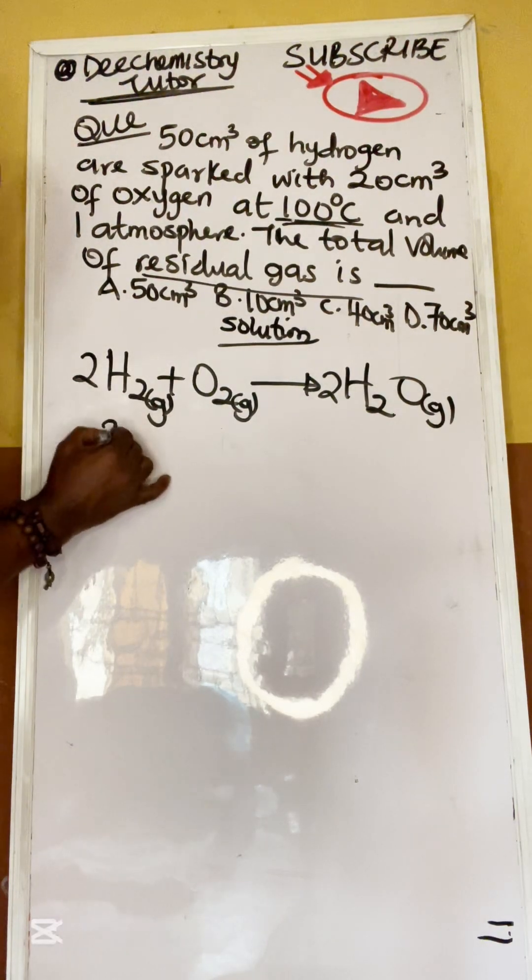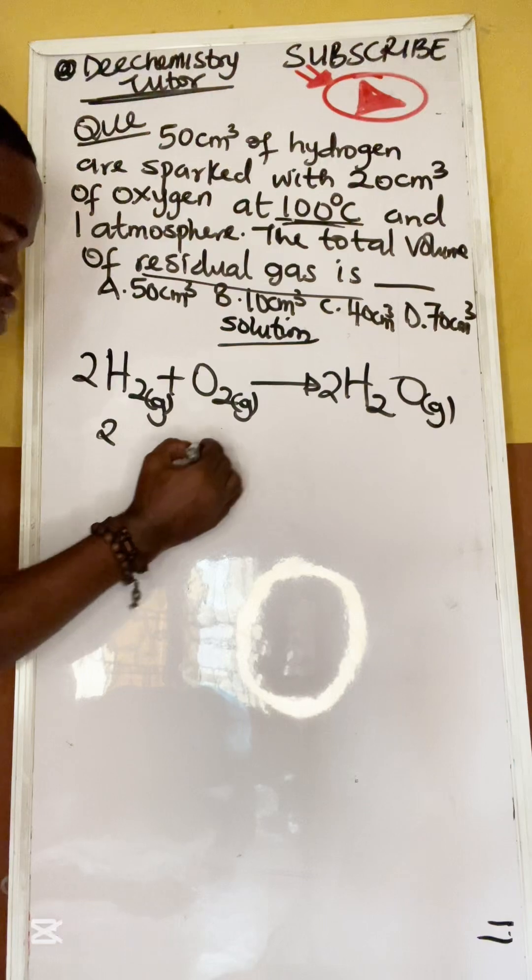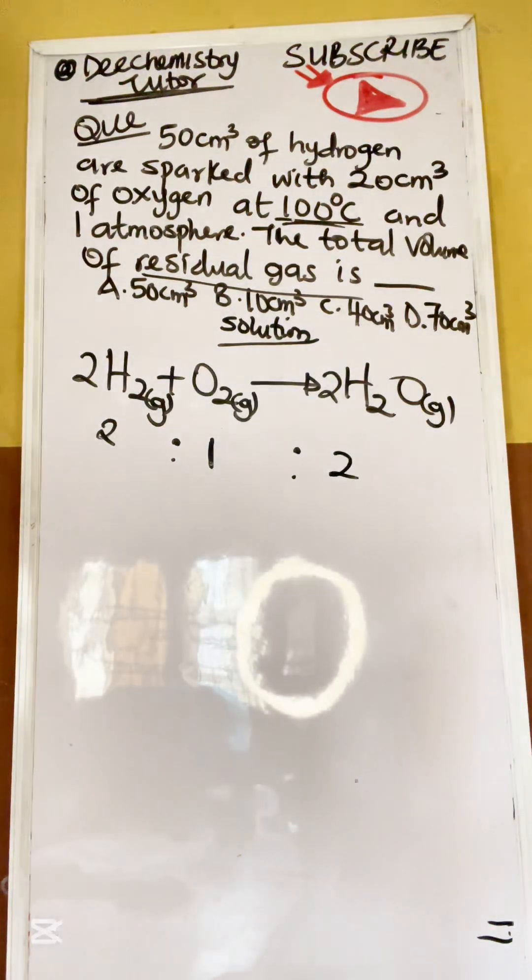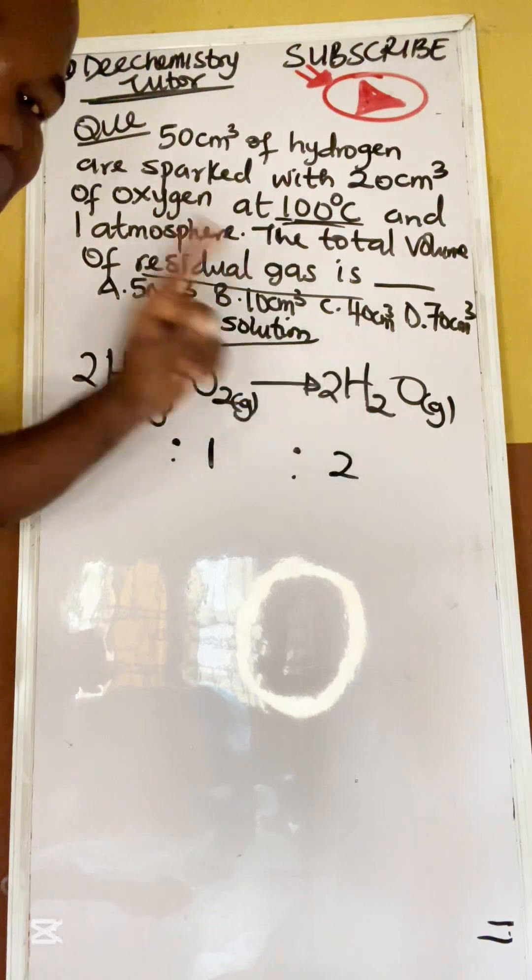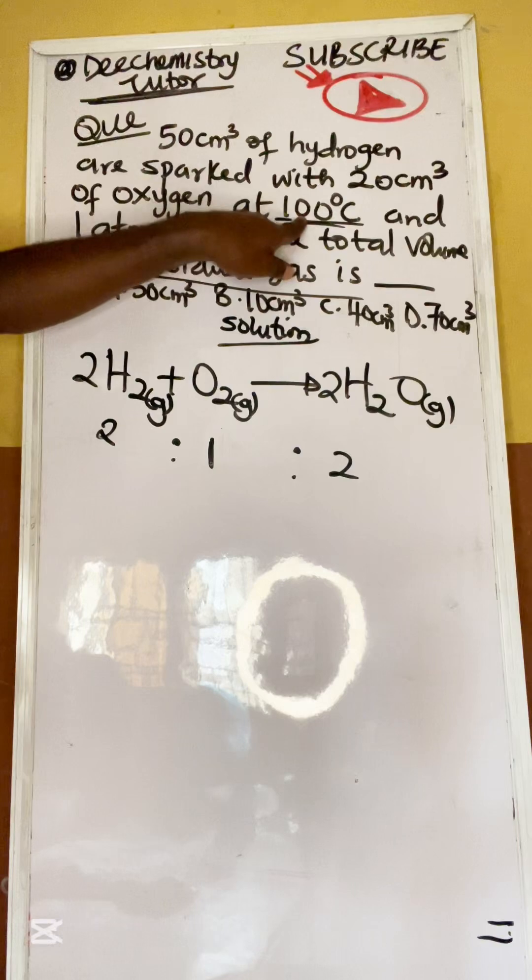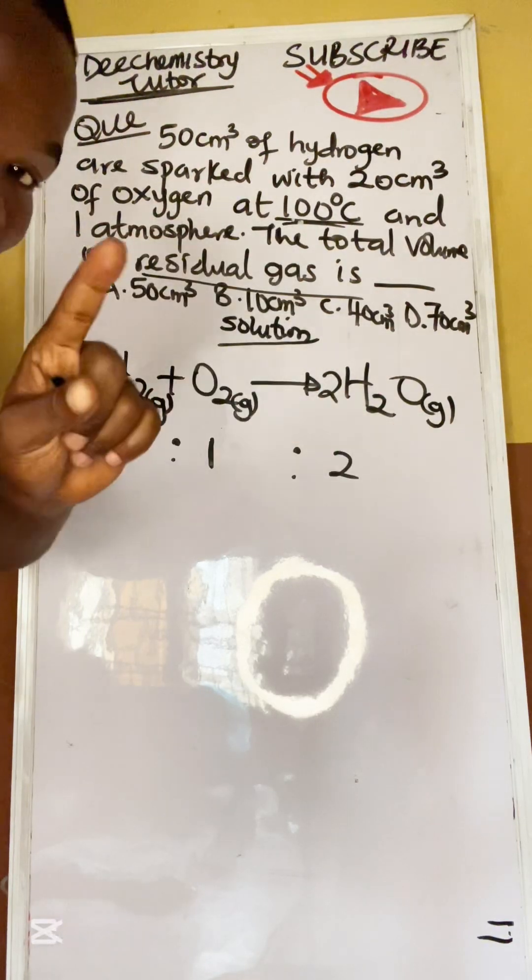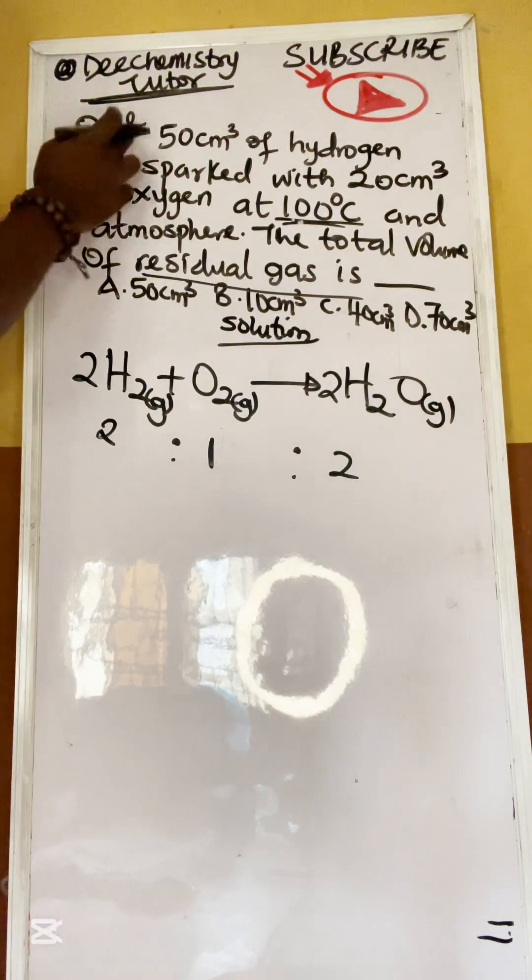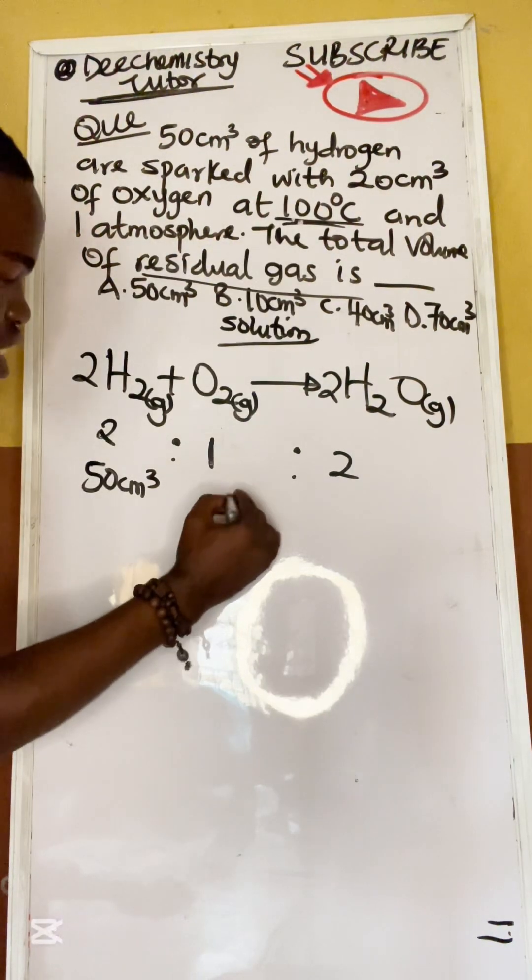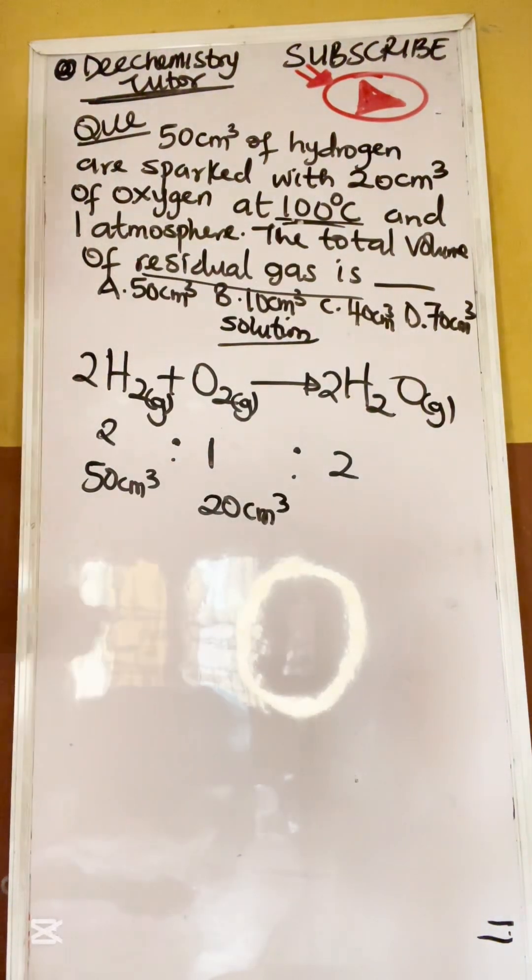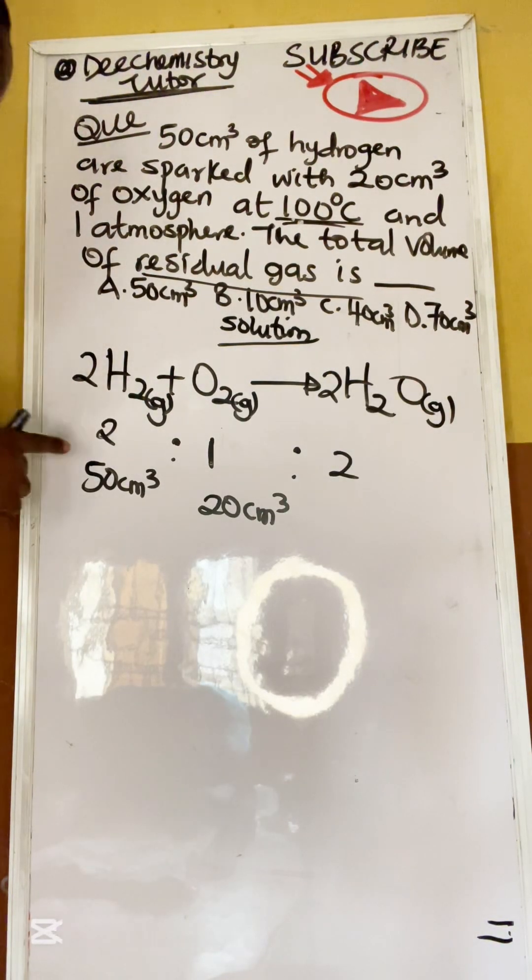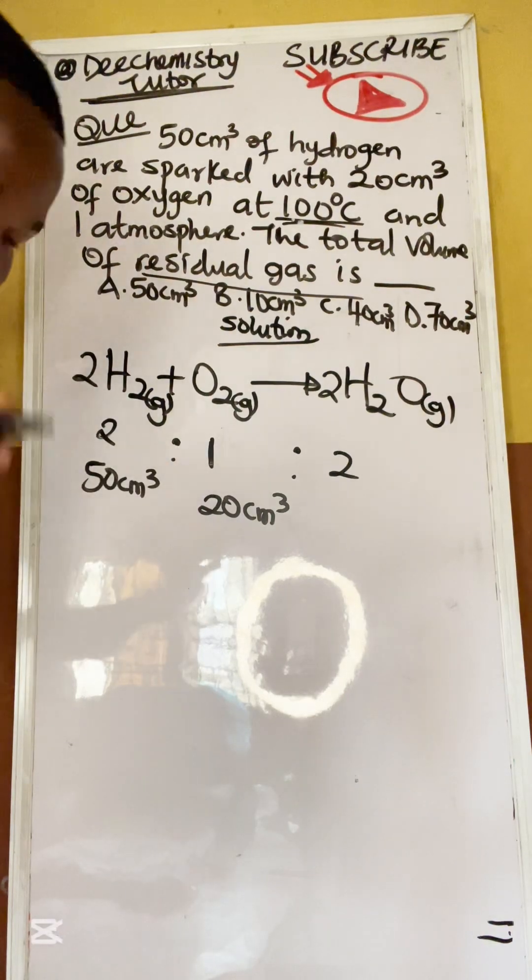That means it is two of hydrogen reacting with one of oxygen to give two of water, which is steam in this case. It is important that they must all be in gaseous state. If it is not at 100 degree Celsius, it will be zero. Now, let's go. They gave us 50 cm³ of hydrogen, 20 cm³ of oxygen. We don't know what this is going to be. But the ratio of this is two to one. That means, now look at it.